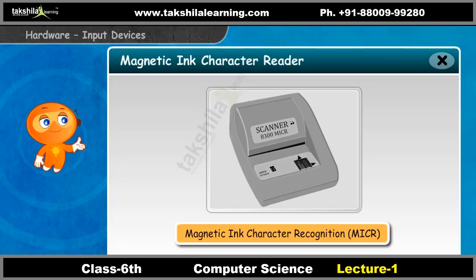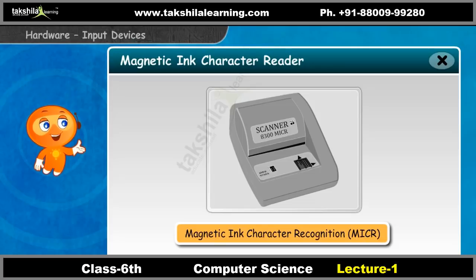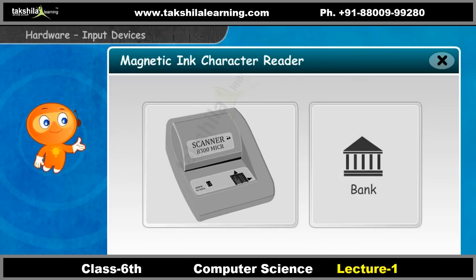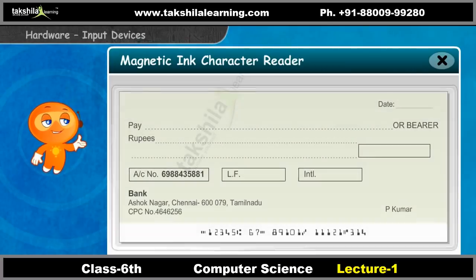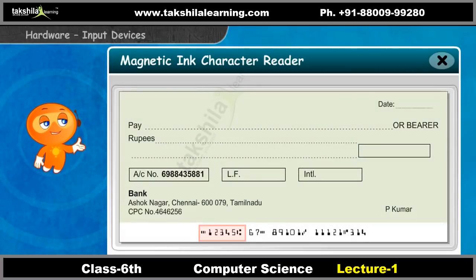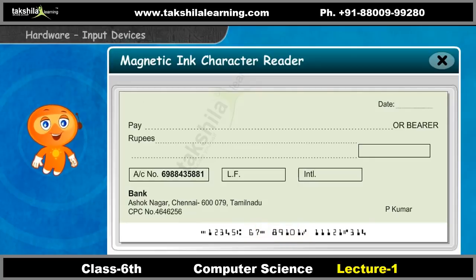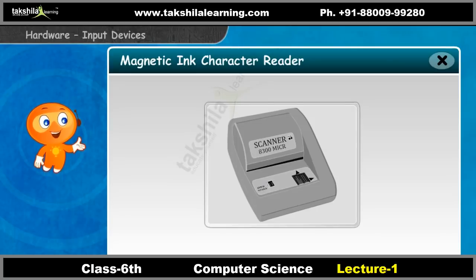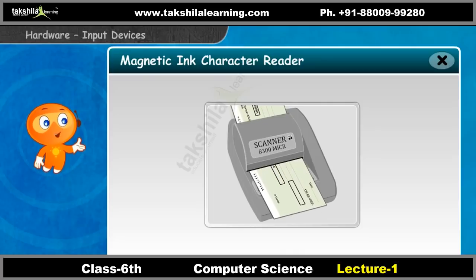Magnetic ink contains magnetic particles. A magnetic ink character reader can identify this magnetic ink. This technique is called magnetic ink character recognition, or MICR. MICR technique is used in all banks. Usually, checks have the check number, bank code, and branch code printed in magnetic ink. Banks use MICR technique to scan the magnetic ink characters in checks and sort them out city-wise or branch-wise.